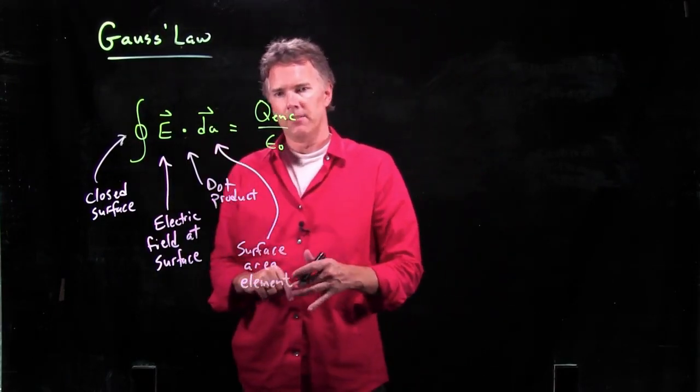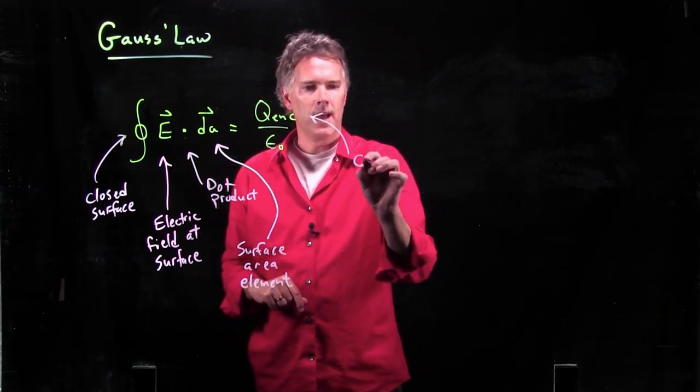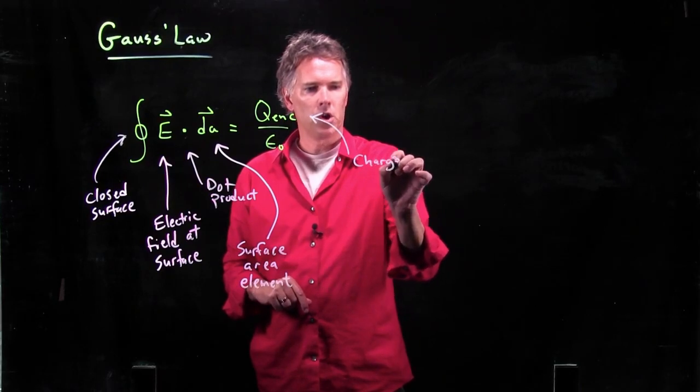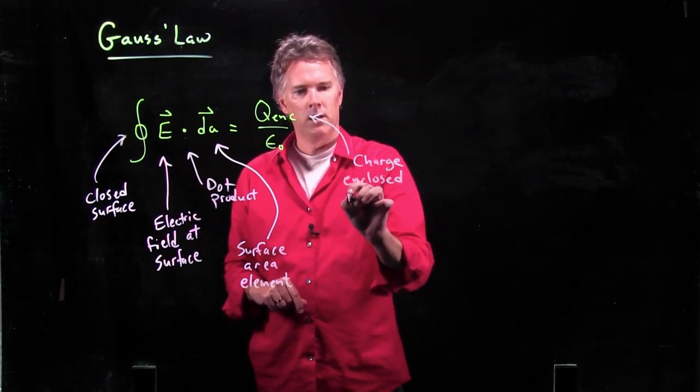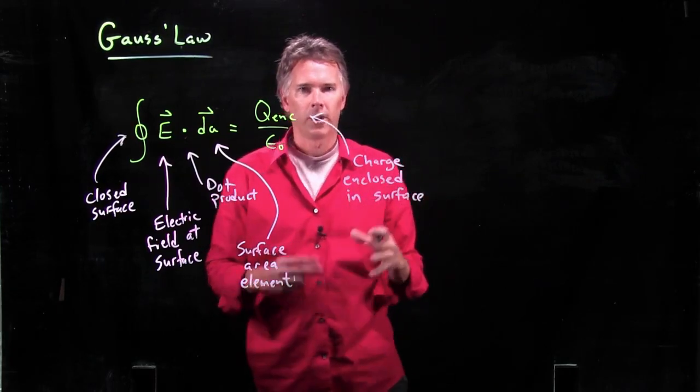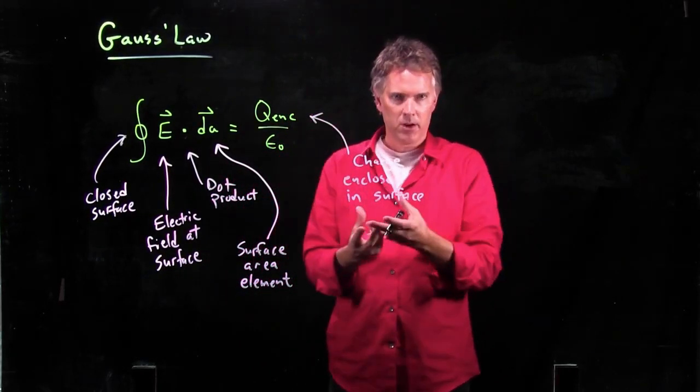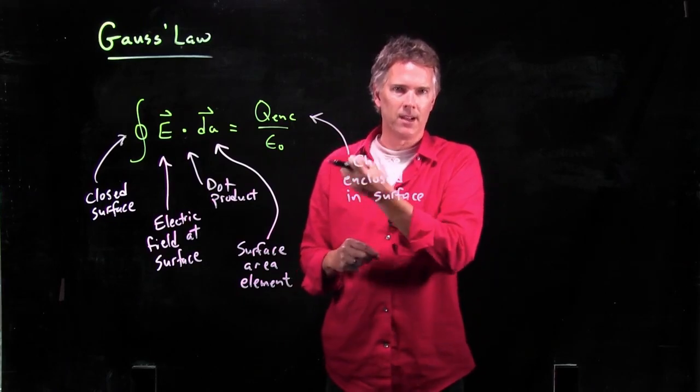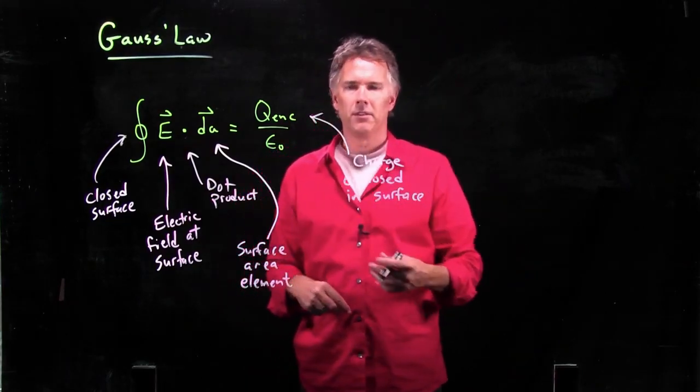What about the stuff on the right side? Q enclosed, that is our good old charge enclosed within that surface. So if it's a closed surface, it's everything inside of it. So for a sphere, it would be all the charges that are inside that volume of the sphere. If it's a cylinder, it would be inside the cylinder.